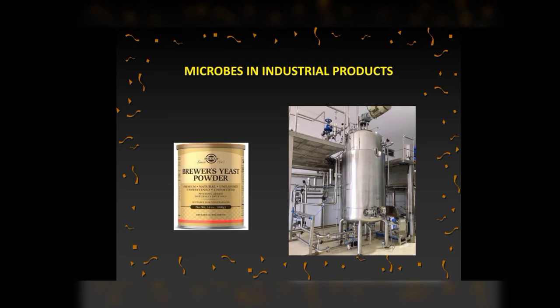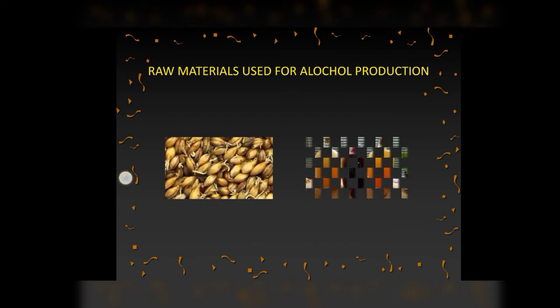Even in industry, microbes are used to synthesize a number of products valuable to human beings — beverages and antibiotics are some examples. Production on an industrial scale requires growing microbes in very large vessels called fermenters. Microbes, especially yeast, have been used from time immemorial for the production of beverages like wine, beer, whiskey, brandy, and rum. For this purpose, Saccharomyces cerevisiae, commonly called brewer's yeast, is used for fermenting malted cereals and fruit juices to produce ethanol.